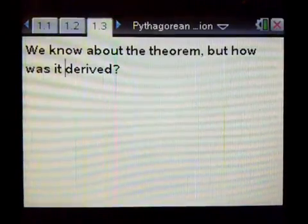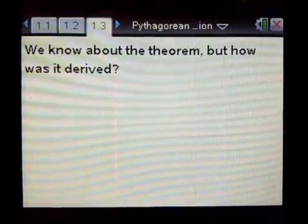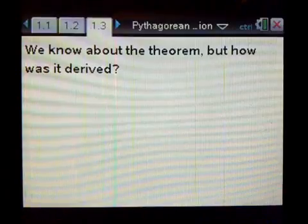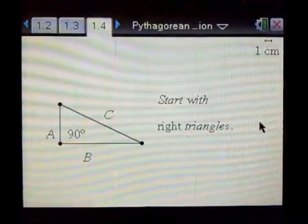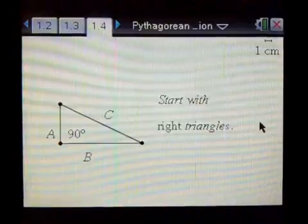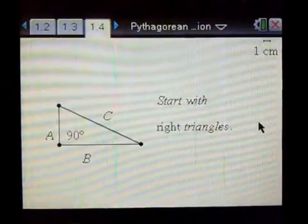We know about the Pythagorean Theorem, but how was it derived? We are going to look at a geometric method. First of all, we're going to start with four right triangles.